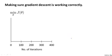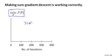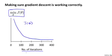Here's something that I often do to make sure that gradient descent is working correctly. The job of gradient descent is to find the value of theta that hopefully minimizes the cost function J of theta. What I often do is therefore plot the cost function J of theta as gradient descent runs. The x-axis here is the number of iterations of gradient descent, and as gradient descent runs, you hopefully get a plot that maybe looks like this.